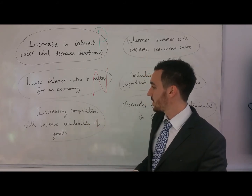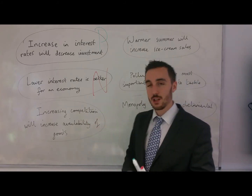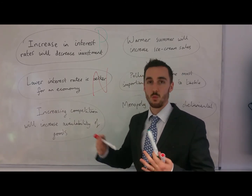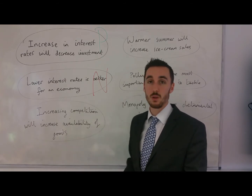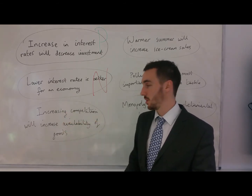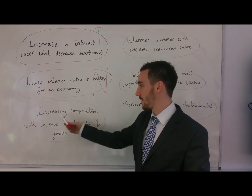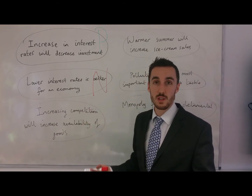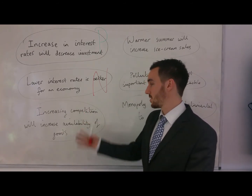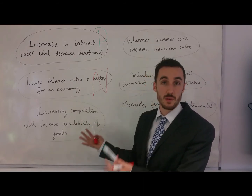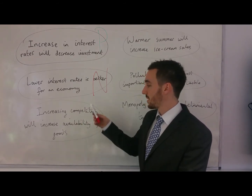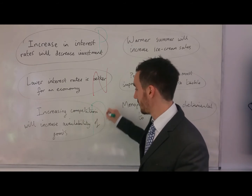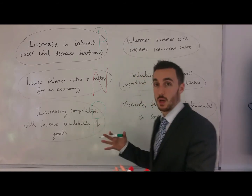'Increasing competition will increase availability of goods.' Let's say there's one firm in the market providing goods and then we have a hundred firms because competition has increased — clearly we can see whether that's going to increase the availability of goods or not. More firms means more goods, so availability would go up. We can prove that with facts, figures, and evidence, so that is a positive statement — one which we can prove correct or incorrect.